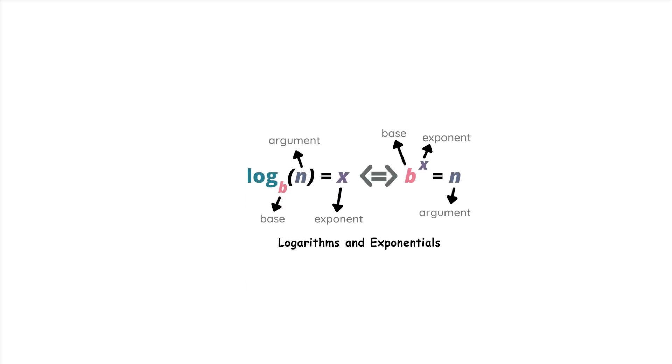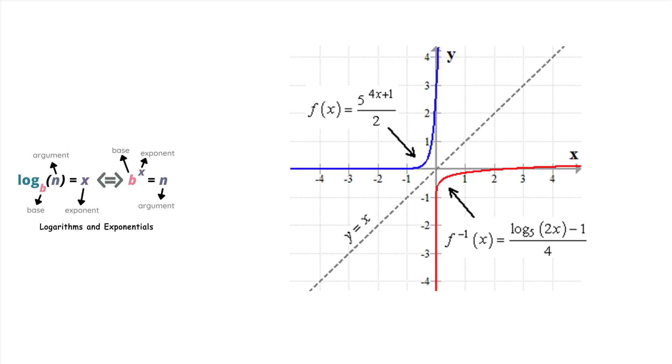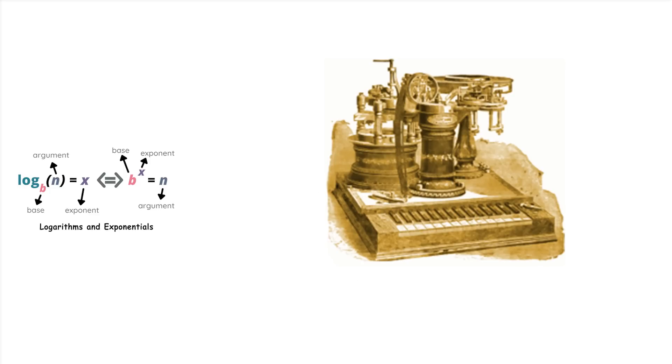Logarithms and exponentials. Logarithms are the inverse operations of exponentials. Imagine you have a magic machine. With this machine, you can do two cool tricks. One is called exponential, and the other is called logarithm. When you use the exponential trick, you start with a number and make it bigger by multiplying it many times by itself. It's like saying, double it, double it again, and so on.